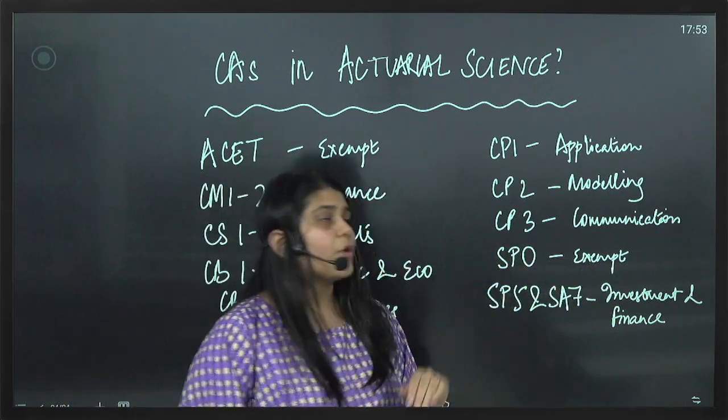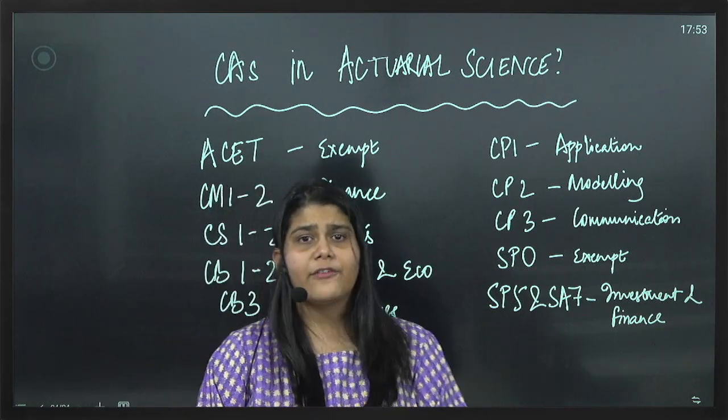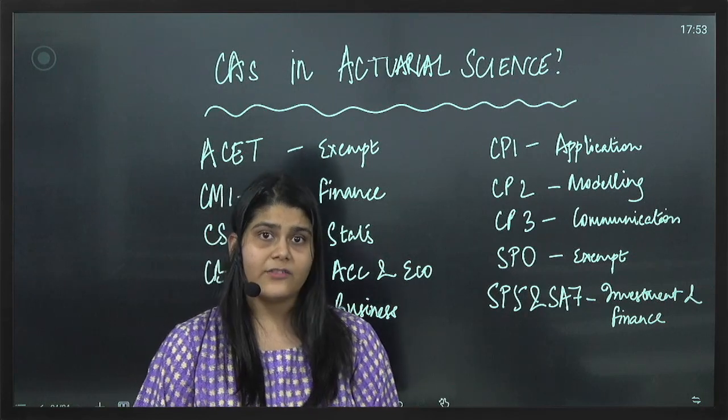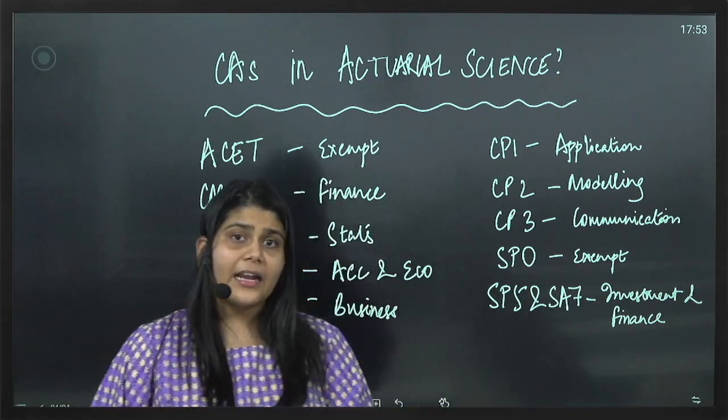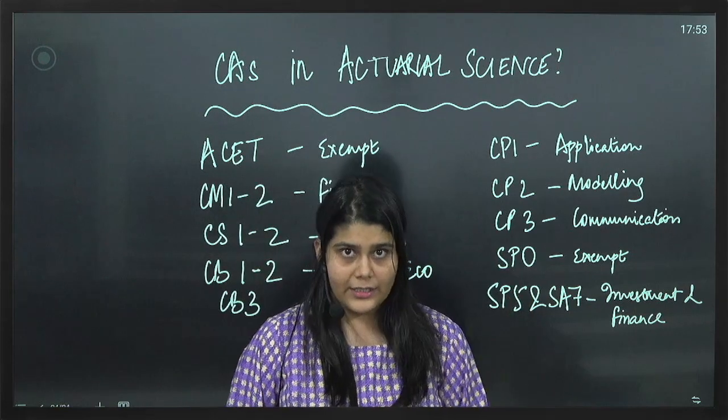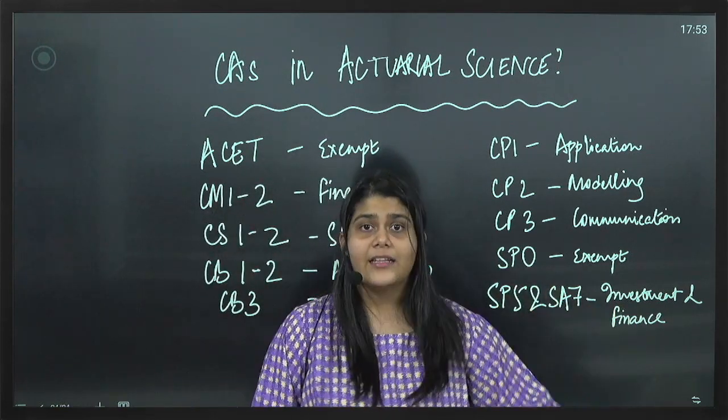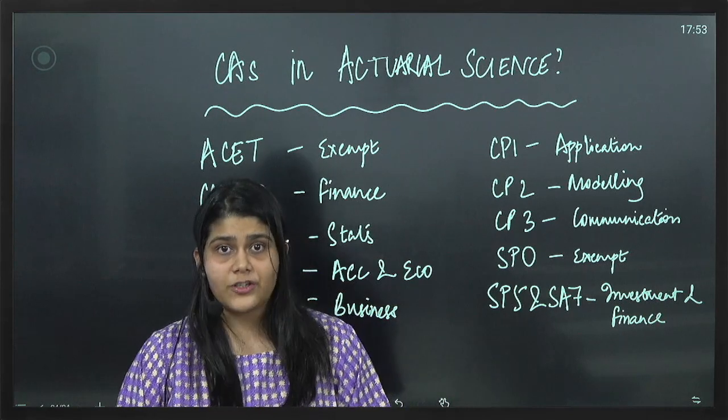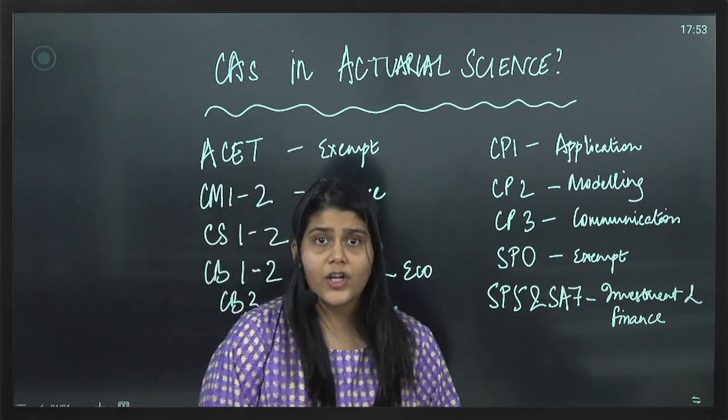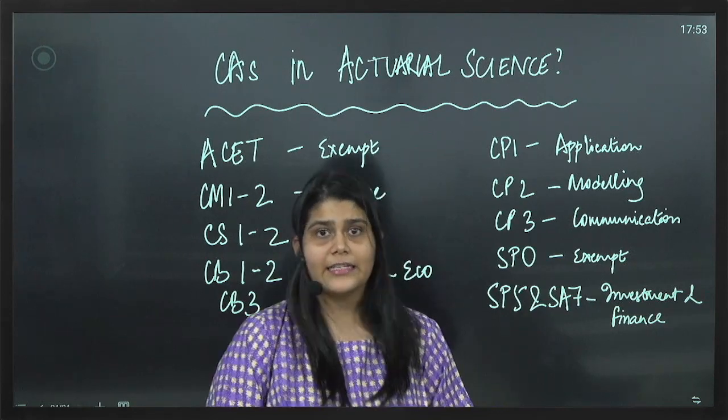The other paper you can go for is SP5 or if you want you can even go for SP6 because as Chartered Accountants finance is our strong point and it would obviously make sense to go for a finance specialization. SP5 and SA7 are the investment and finance specialization papers in actuarial science which is again a large portion covered already in CA course.